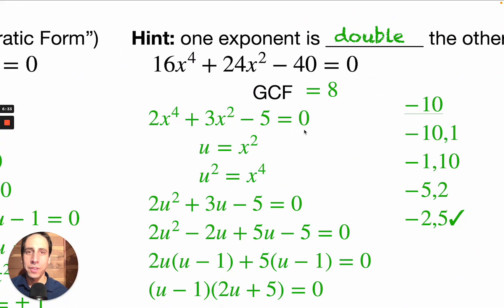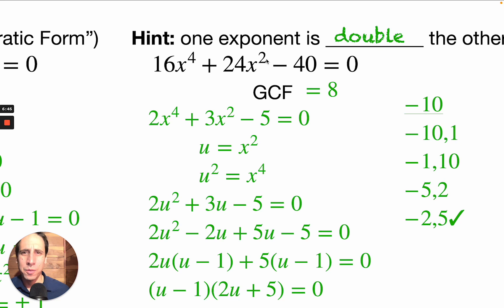Now we've got a GCF also. Instead of writing it with parentheses, I'll divide 8 from all terms on both sides, giving us the simpler equation 2x to the fourth plus 3x squared minus 5 equals 0.